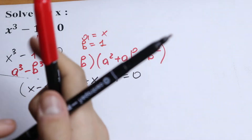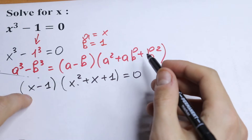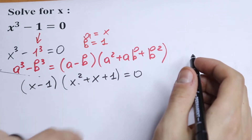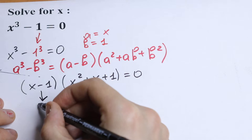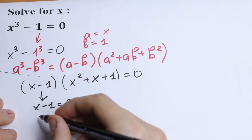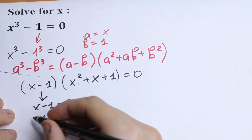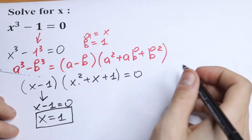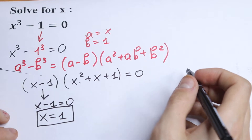Since we have a product equal to zero, each factor can equal zero. From the first factor, x minus 1 equals 0, so x equals 1. As you can see, this is the most obvious root we expected from the beginning.